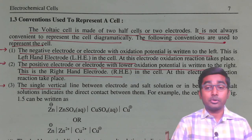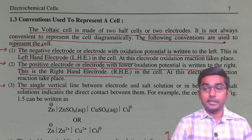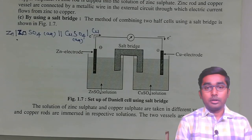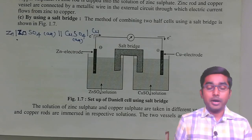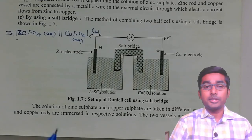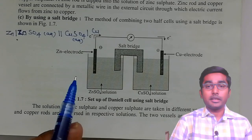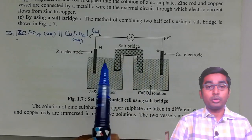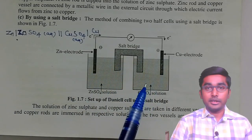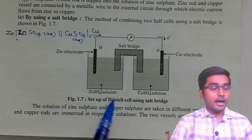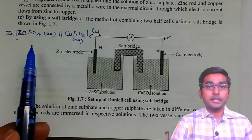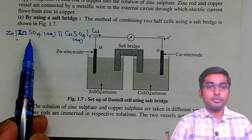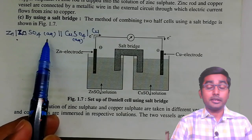Previously we have seen the Daniel cell, so let us look at this Daniel cell. This is a Daniel cell and let us identify each part of the Daniel cell and what conventions are used. This is the Daniel cell and its electrochemical representation is written here. Look at here: zinc, single vertical line, zinc sulfate, and then in bracket 'aqueous' is given.